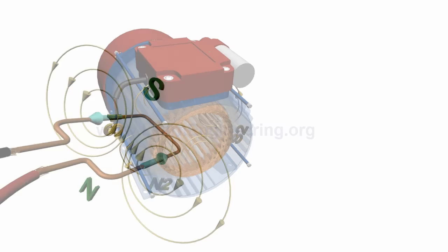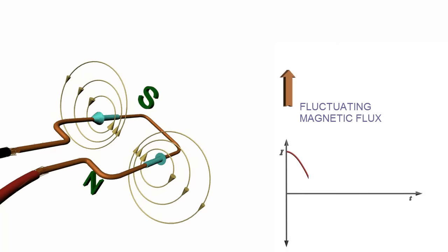Single-phase current passing through a coil will produce a fluctuating magnetic field. But how to make such a field rotating?